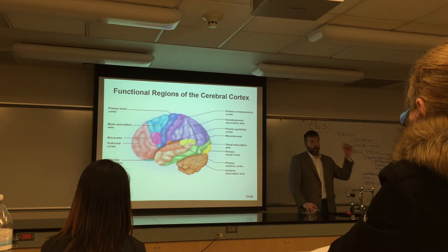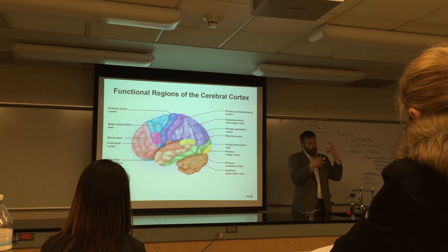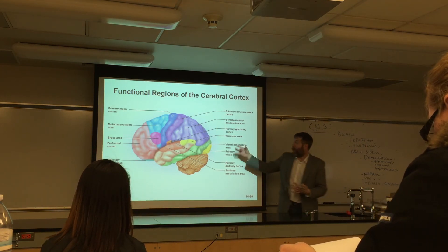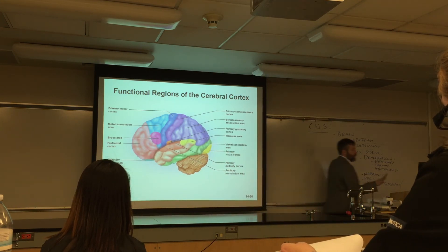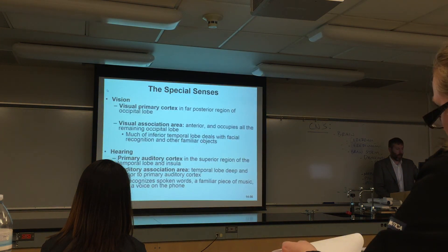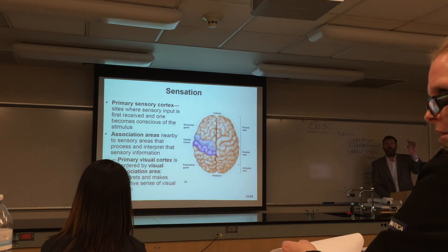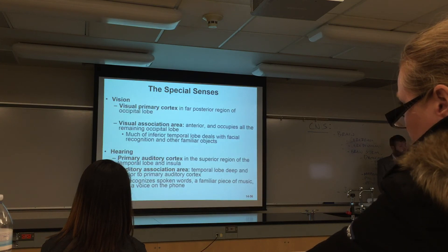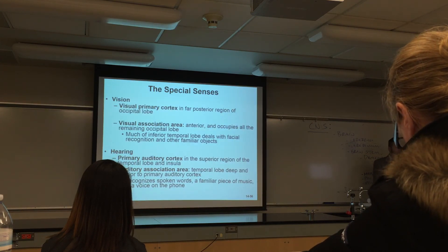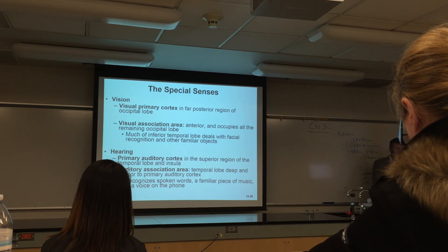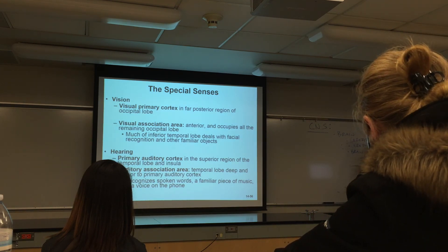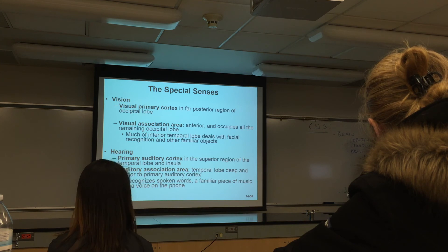All voluntary skeletal muscle movement neurons are found in the primary motor cortex of the frontal lobe. All general sensory information — when I touch a hot stove — travels back to the primary sensory cortex of the parietal lobe. There are regions in the temporal lobe and frontal lobe — Wernicke's area and Broca's area — associated with speech: the ability to form a word in your mind and produce sound. There's also a visual cortex in the occipital lobe and an auditory cortex primarily in the temporal lobe.